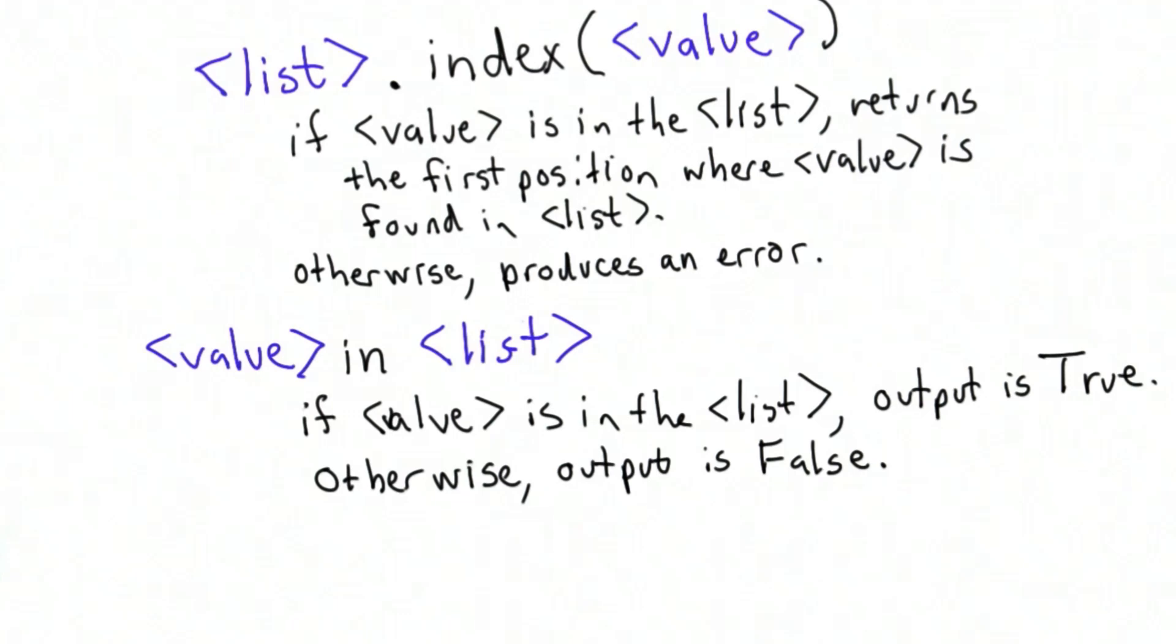So to summarize the behavior of the in operator, if the value is in the list, the output is true. Otherwise, the output is false.